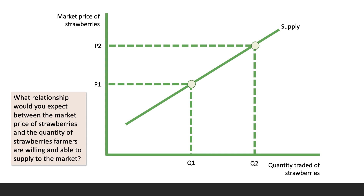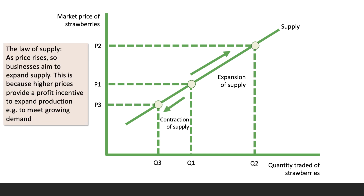When the price goes up there's an expansion of supply. If the price were to go down, there's less profit to be made — indeed the price may not even cover the costs of production. So if the price falls to P3, we would expect to move down the supply curve, and that would be a contraction of supply. The law of supply states that as price rises, businesses aim to expand their production, because higher prices provide a profit incentive to meet growing demand.